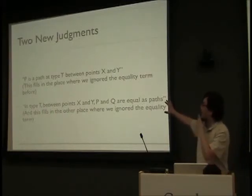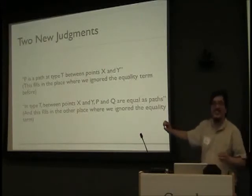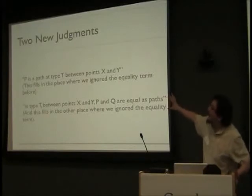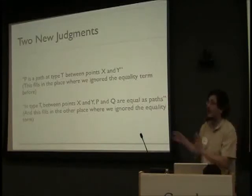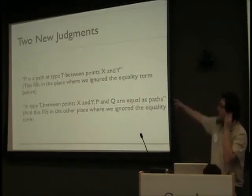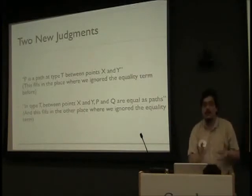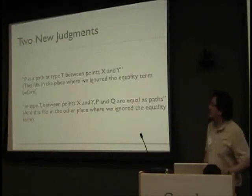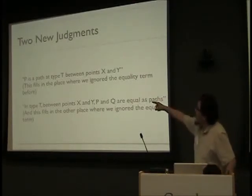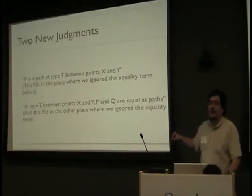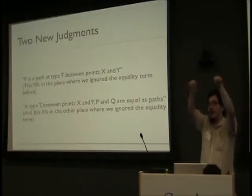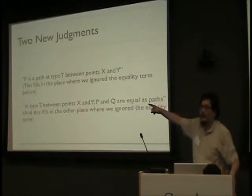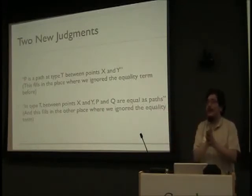Assuming we had the system I've described and we want to say how do we make it compute — and how do we start to reason about it and not just give univalence as an axiom — the first thing is we need to fill in those holes I pointed out, those places where equalities were just dropped on the floor and ignored. But what would we fill in? We ignored the equality term before when we said two things are equal if we just normalize them and they look equal. Instead we're going to have a judgment that says this path is a valid path.